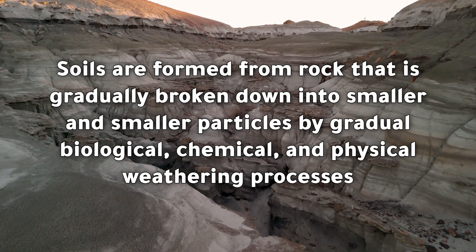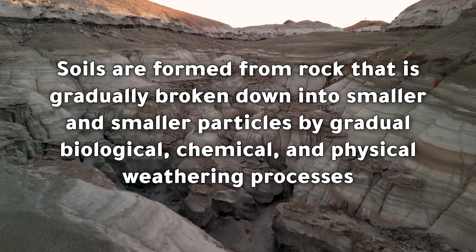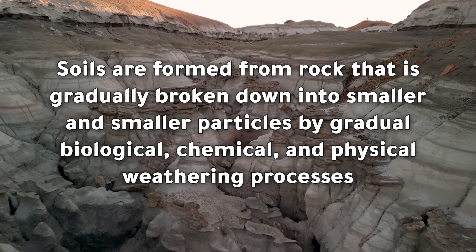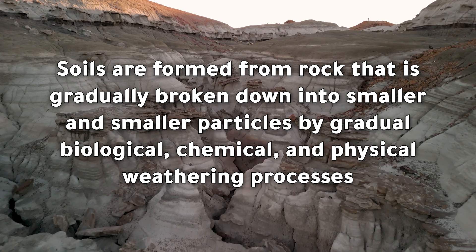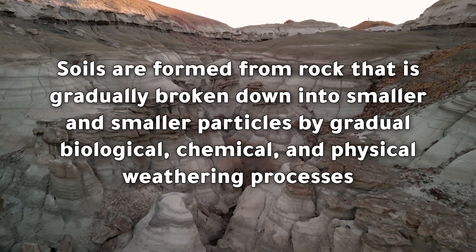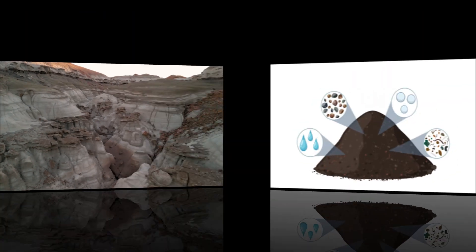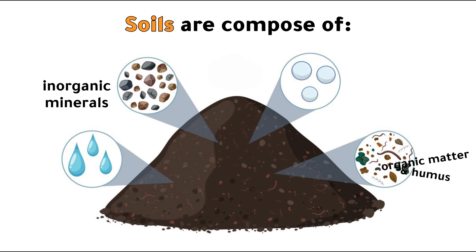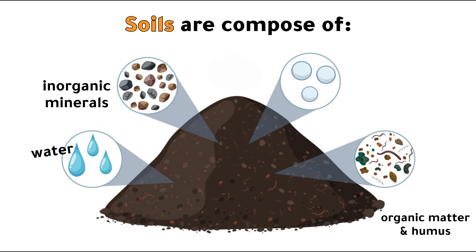Soils are formed from rock that is gradually broken down into smaller and smaller particles by gradual biological, chemical, and physical weathering processes. Soils are composed of inorganic minerals that come from weathering, organic matter and humus, water, and air.